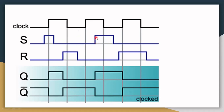When S is high and clock is high, Q changes to high and Q dash changes to low. When R is high but clock is low, even though R is high we don't get any change in the output. But when the clock goes high, Q changes to low and Q dash changes to high. So the clock is an important input to this Clocked SR Flip-Flop.